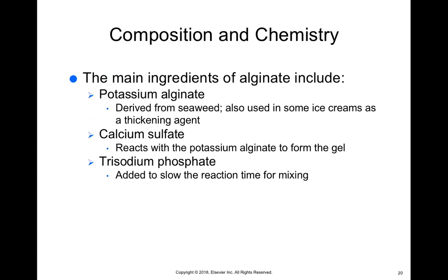Here's what alginate is made of: potassium alginate, which comes from seaweed, sometimes with additives to make it thicker. Calcium sulfate helps that reaction happen — it's what makes it go from a liquid solution and transform into a gel. Trisodium phosphate is added to slow the reaction time so it doesn't set too quickly. A good way to study this is to make flashcards with the ingredient on one side and its purpose on the other.